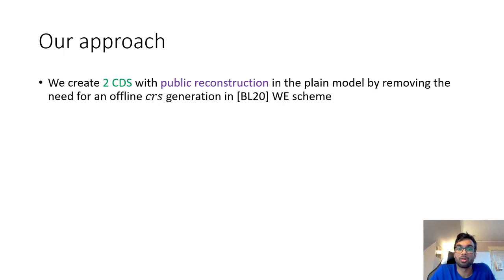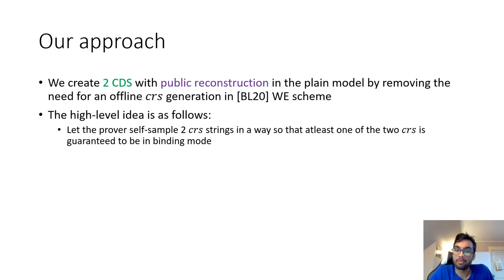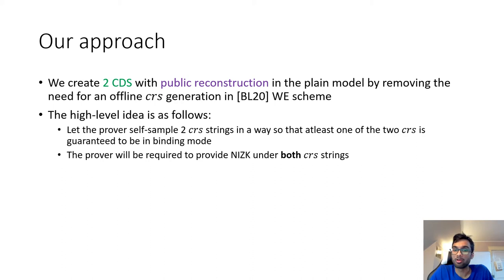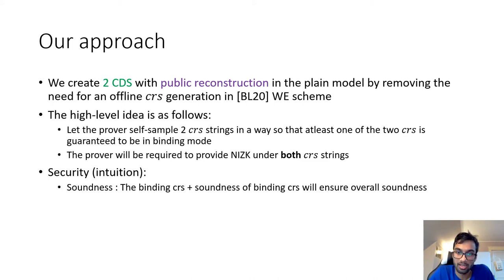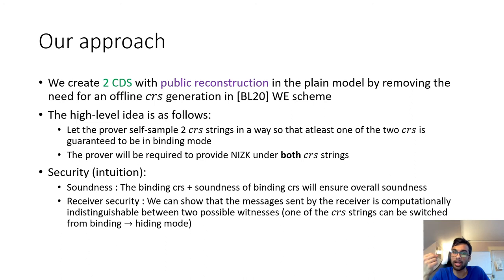Our approach creates two-party CDS with public reconstruction property in the plain model by removing the need for an offline CRS from the Benhamouda-Lin scheme. The high-level idea: we allow the prover to self-sample two CRS strings such that one of them is guaranteed to be in binding mode, and the prover provides valid NIZK proofs under both CRS strings. The security intuition is that since one CRS is guaranteed to be in binding mode, the soundness of the binding CRS ensures overall soundness. Receiver security holds because in the security proof we can switch one CRS from binding to hiding mode and switch witnesses, ensuring witness-indistinguishability-style hiding.